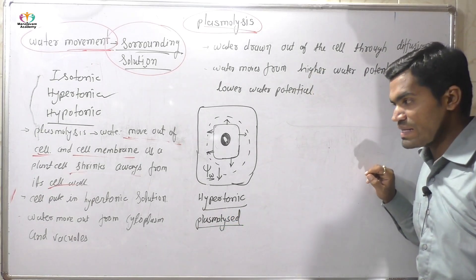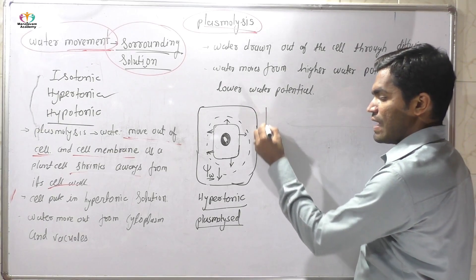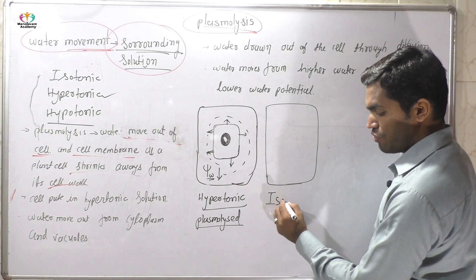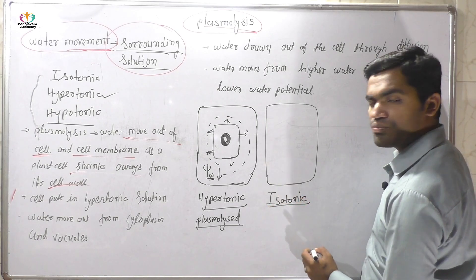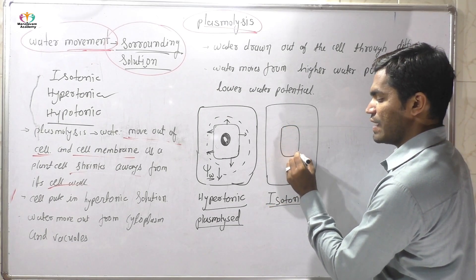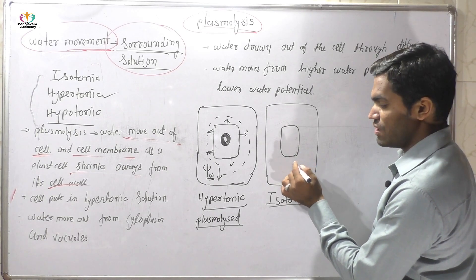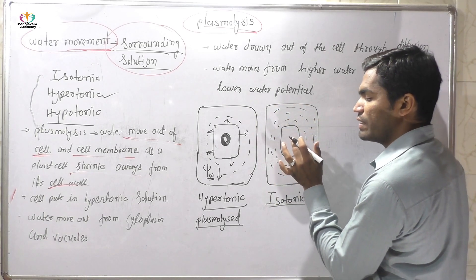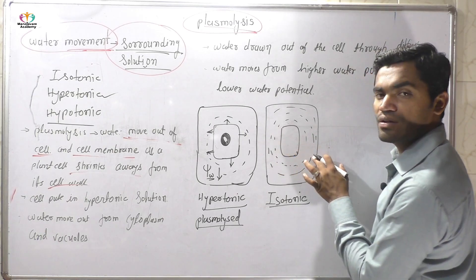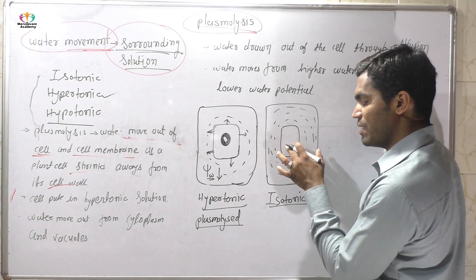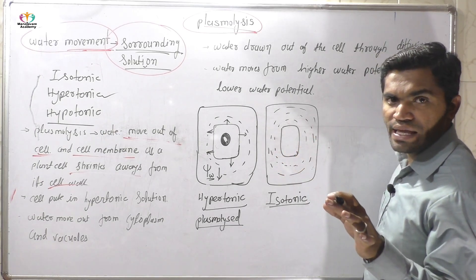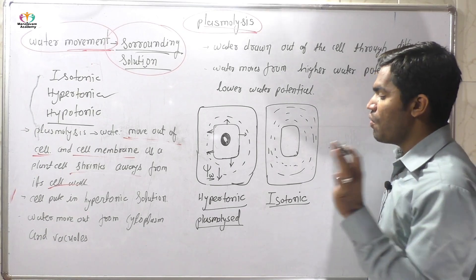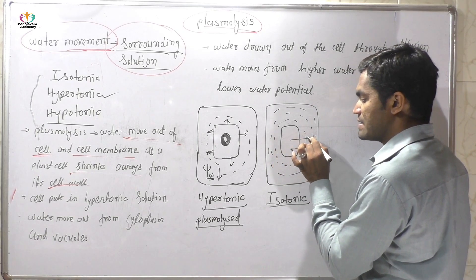That condition is called plasmolysis. But when the cell is put in an isotonic solution — meaning the cytoplasm concentration is similar to the outside solution — the water potential is similar on both sides. Due to this, no concentration gradient is created, and therefore water cannot enter or exit from the cell.